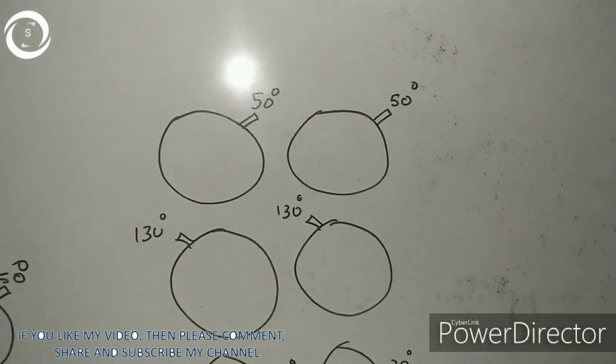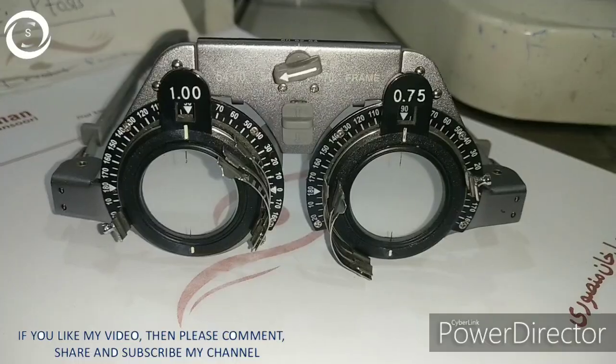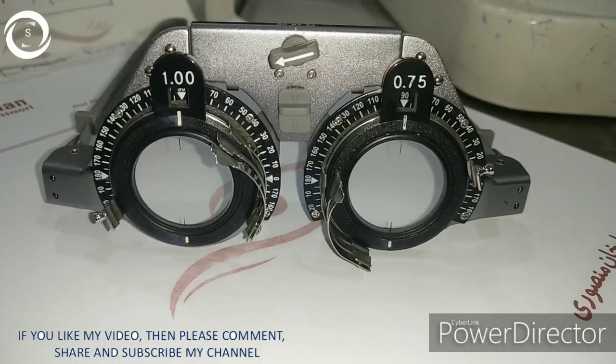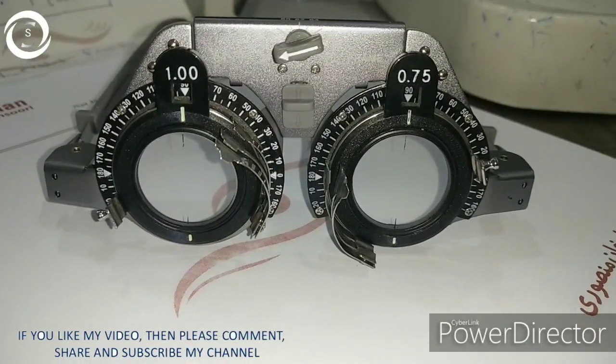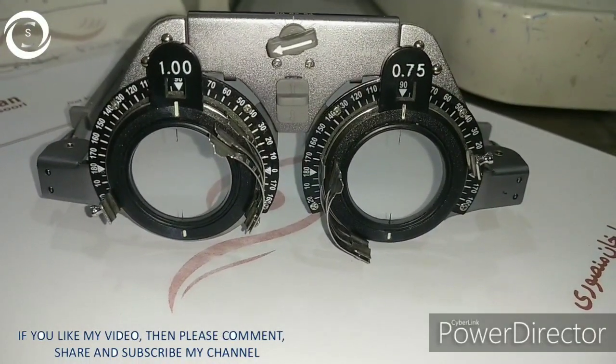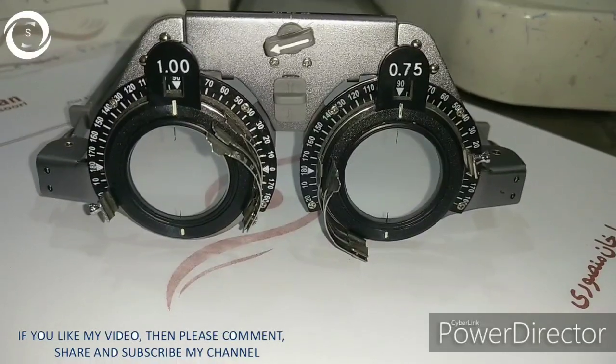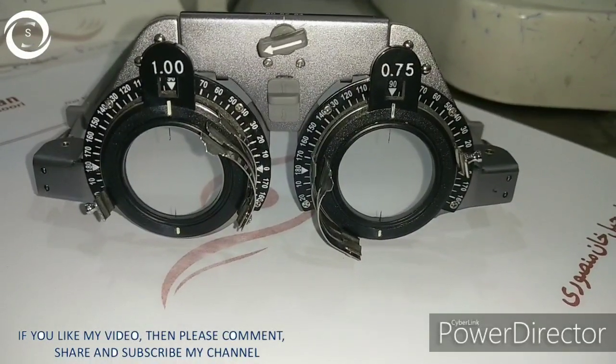And now I will show you eight practical examples. Now this first patient has hyperopic astigmatism. Both eyes at 90 degree. If it's not exactly 90 degree, it should be within 10 degrees to each other.